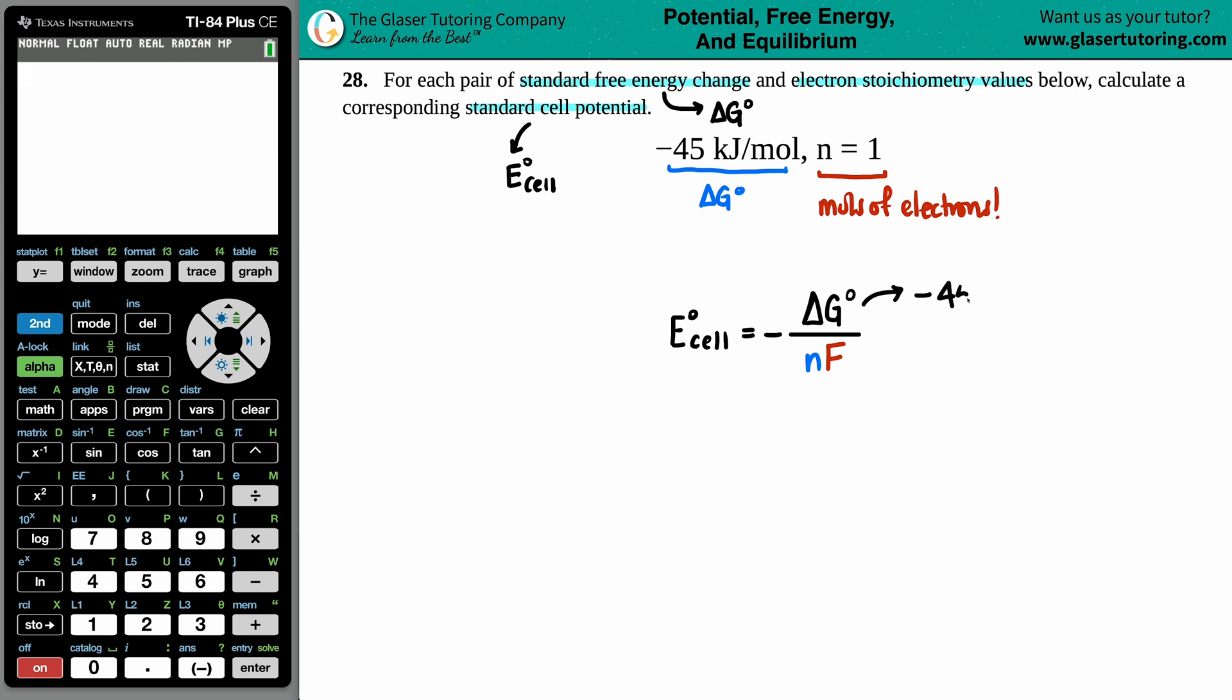Now the delta G, just like we said, was the negative 45 kilojoules per mole. The n was the number of moles of electrons, so that's one. The F - they didn't give us - but F is Faraday's constant, named after him. That's always 96,485. The units here are coulombs per mole.